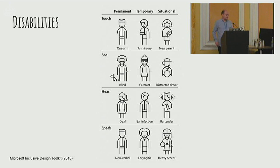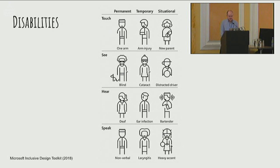When we think about disabilities, we don't always have to think about them being permanent. This Microsoft toolkit demonstrates three types of disability: permanent, temporary, and situational. A parent holding a newborn baby has one arm effectively disabled — that's a situational disability. And if you're a bartender in a very loud environment, your hearing is also impaired — that's an example of situational hearing loss. When we think about accessibility, we've also got to consider temporary and situational disabilities, not just permanent ones.